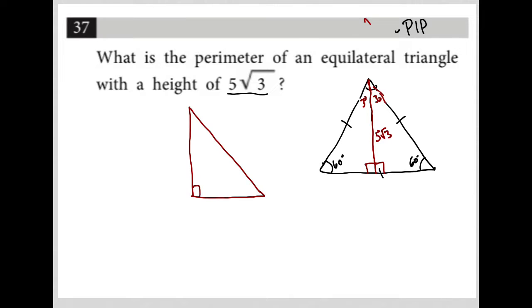So again, right angle, 5 root 3. This is my 30 degree angle. This is my 60 degree angle.